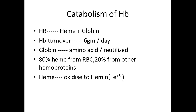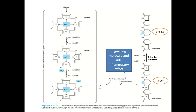We have already discussed the catabolism of heme that includes the production of bilirubin. There is only one metabolism in our body that produces carbon monoxide as a byproduct, which can act as an anti-inflammatory and signaling molecule. The bilirubin produced in our body acts as an antioxidant molecule that participates in various antioxidant reactions.